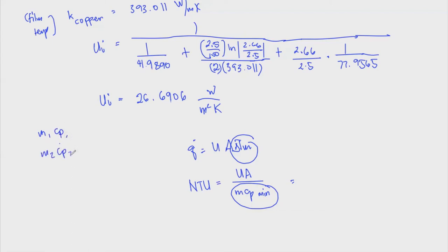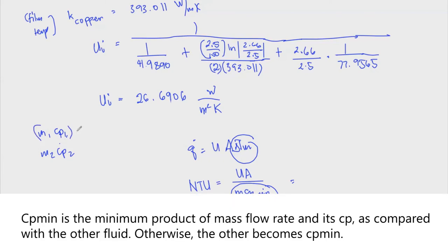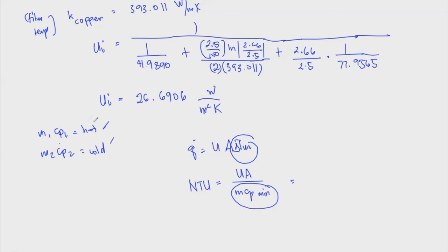NTU equals U·A divided by (ṁ·Cp)_min. This ṁ·Cp_min is simply the mass flow rate of the fluid that gives the minimum value when multiplied by its Cp. There are two cases: the hot fluid and the cold fluid. The one giving the lower value of ṁ·Cp is C_min; the other is C_max. They can interchange depending on the result, so we can't say in advance — it depends on the answer.